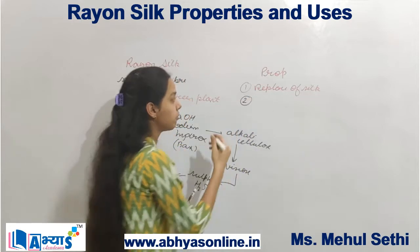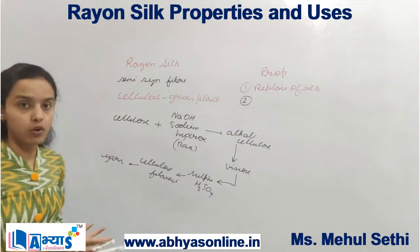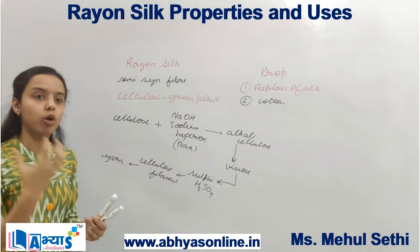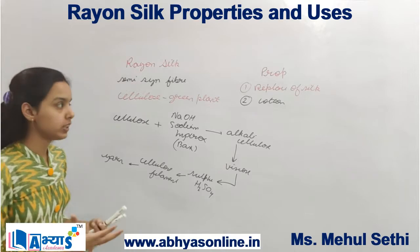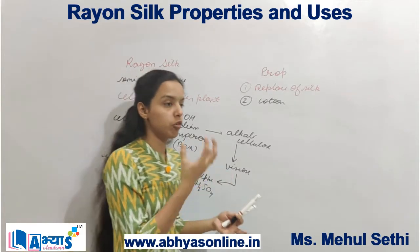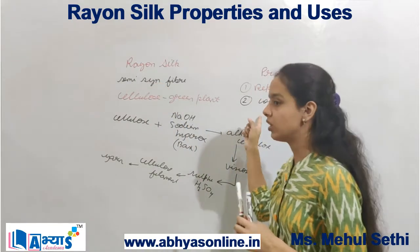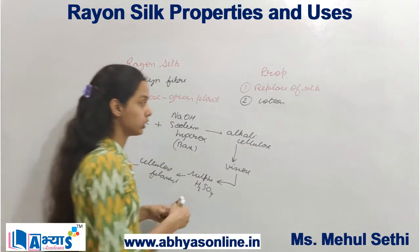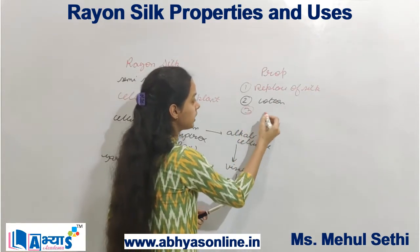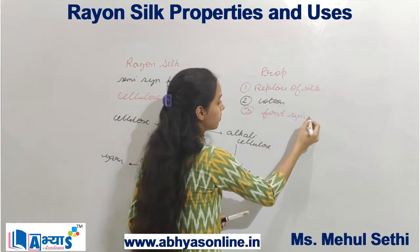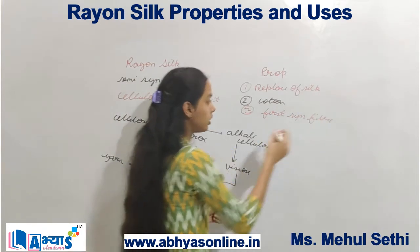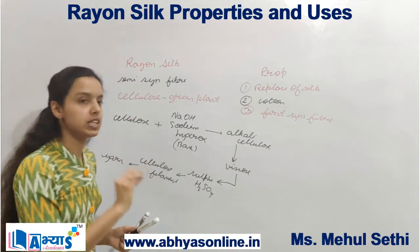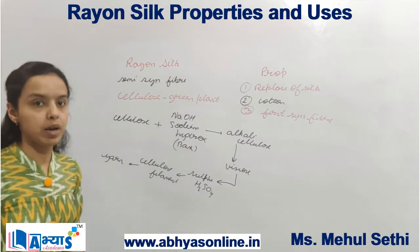The next property of rayon is that it can be mixed with cotton. When mixed with cotton, we can also get the properties of cotton. Since cotton has the property of absorption of sweat, rayon mixed with cotton will also have sweat-absorbing properties. Additionally, rayon is considered the first synthetic fiber, though it is not a true synthetic fiber since the raw material is cellulose. Still, it holds the contribution of being the first synthetic fiber developed by scientists.